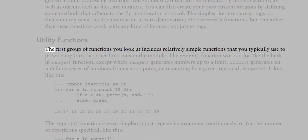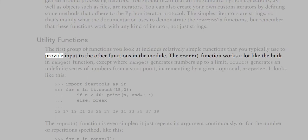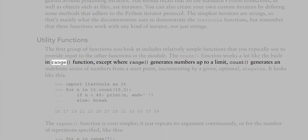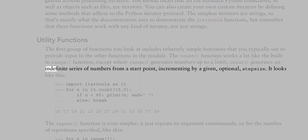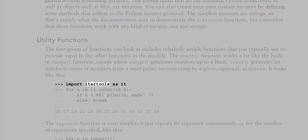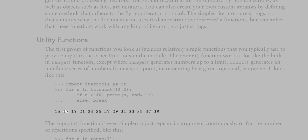The first group of itertools functions includes relatively simple utility functions. The count function works like the built-in range function except it generates an indefinite series of numbers from a start point, incrementing by a given optional step size. For example, iterating over it.count(15, 2) with a break condition produces: 15, 17, 19, 21, 23, 25, 27, 29, 31, 33, 35, 37, 39.